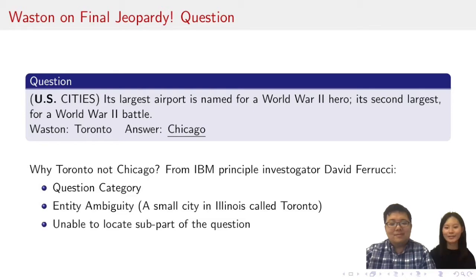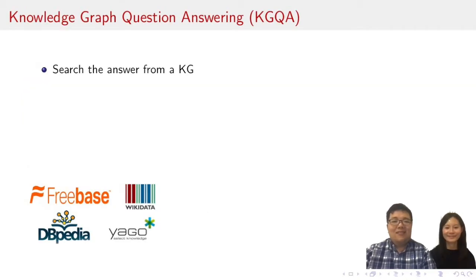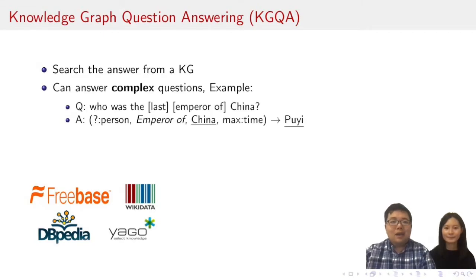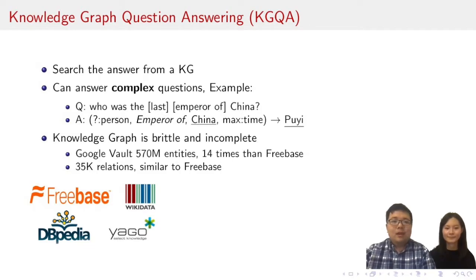How do QA systems nowadays work? Today, factoid QA can be split into two general approaches. The first is knowledge graph-based question answering. Find an entity in knowledge graphs like Freebase or DBpedia. It can answer complex questions, but only if the knowledge graph has the information. Who was the last emperor of China was great, and Puyi is found in the KG.